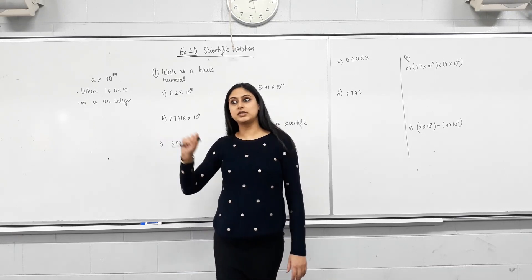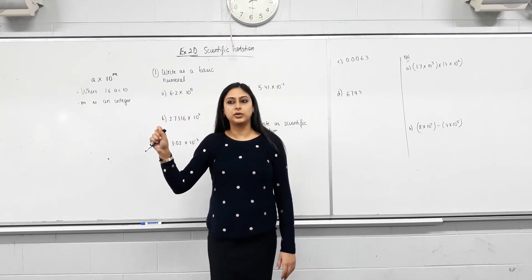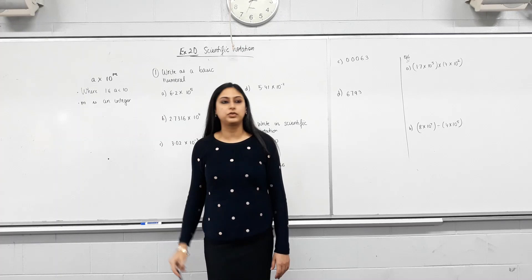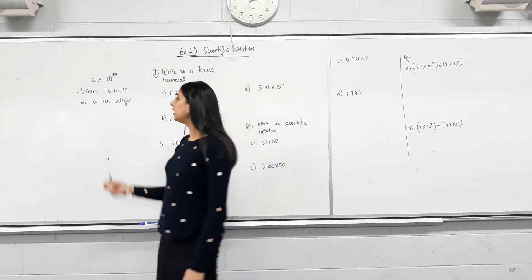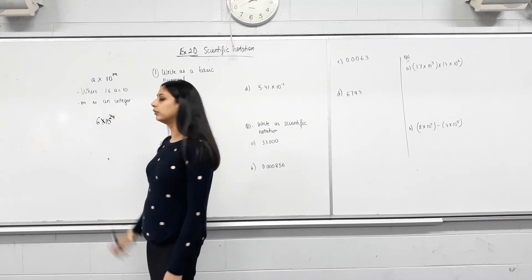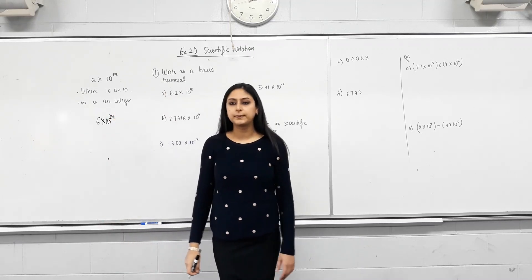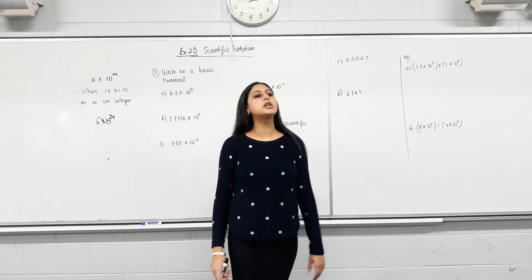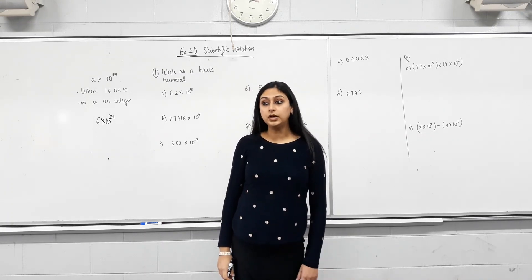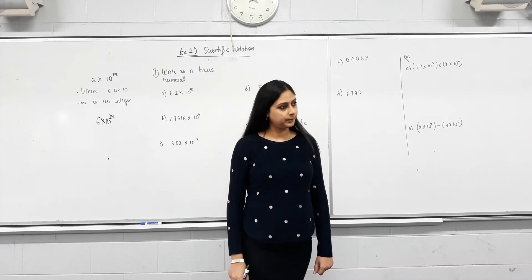So if I was to write it here, 6 and then 24 zeros in kilos, it'll take me the whole lesson and I'll still make mistakes. And how will you count, right? How will you read that number? So it's easier to just write 6 times 10 to the power of 24. Does that make sense? Yes, so scientific notation comes in very handy when we're writing numbers that are either too big or too small.